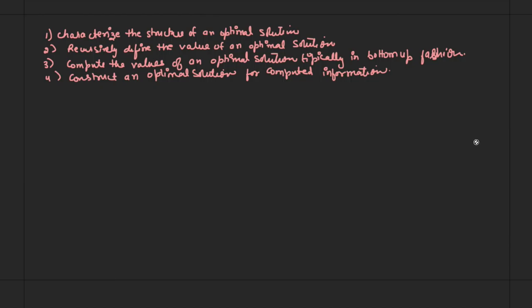Steps 1, 2, and 3 form the basis of a dynamic programming solution to a problem. If we need only the value of an optimal solution and not the solution itself, we omit step 4. When we do perform step 4, we sometimes maintain additional information during step 3 so that we can easily construct an optimal solution.